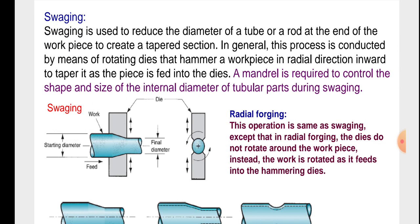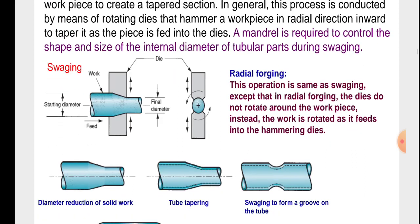A mandrel is required to control the shape and size of the internal diameter of tubular parts during swaging. The swaging figure shows: starting diameter, work, feed, and final diameter. The side view of the dies is also given.